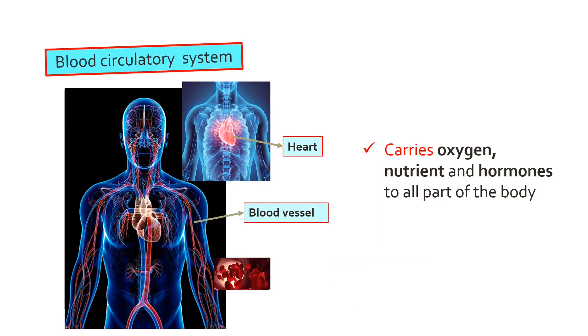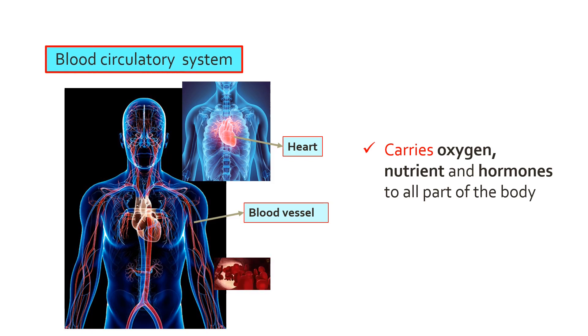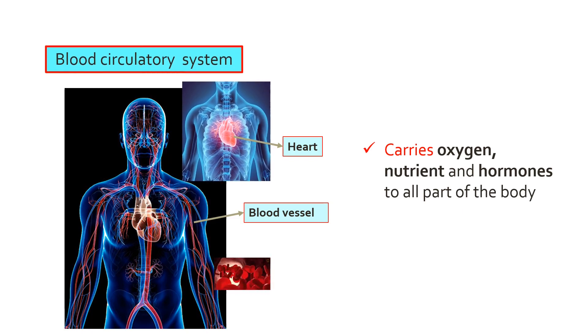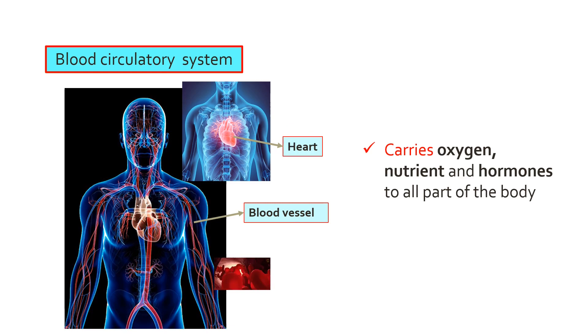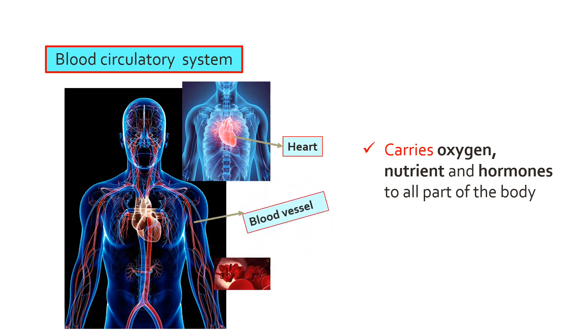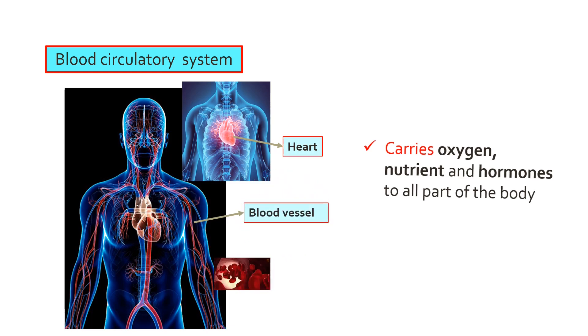Blood circulatory system: organs involved are the heart and blood vessels. It carries oxygen, nutrients, and hormones to all parts of the body.